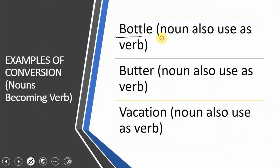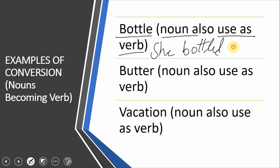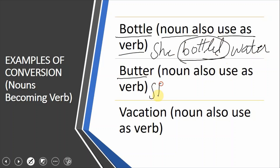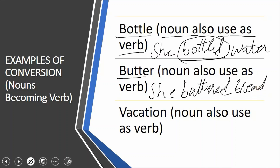Conversion کے کچھ examples دیکھتے ہیں۔ Bottle as a noun تو use ہوتا ہے، لیکن as a verb بھی use ہوتا ہے — for example: she bottled water، یعنی اس نے bottle میں پانی بھرا۔ اسی طرح butter: she buttered the bread، یعنی اس نے bread پر مکھن لگایا۔